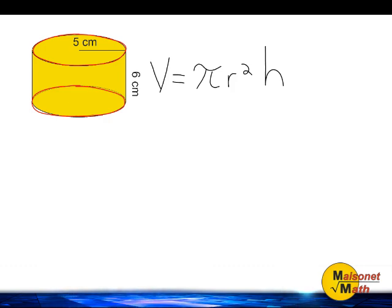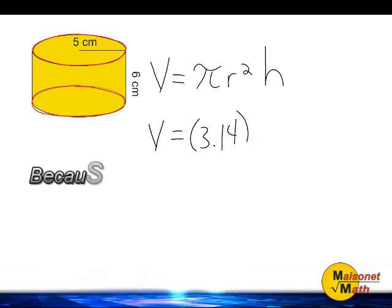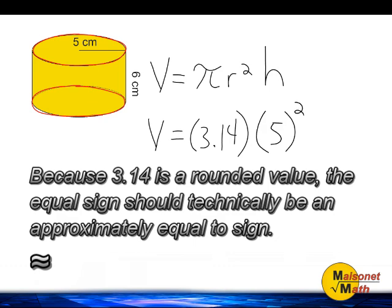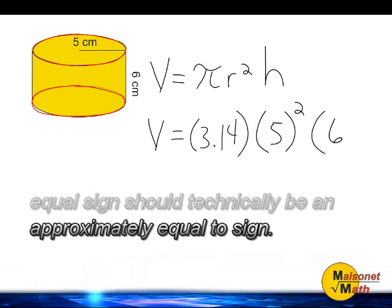So the next thing that we are going to do to figure out what the volume of this particular cylinder is, is we are going to substitute 3.14 for pi, and then we are going to multiply that by the radius to the second power. Our radius is 5, so we will raise that to the second power. And of course, we are going to take that and multiply it by the height of the cylinder, which is 6 centimeters.